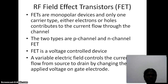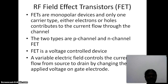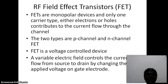Field effect transistors are shortly called FET, or monopolar or unipolar devices. Unipolar device means the current flow is due to only one type of carrier — that is either due to holes or due to electrons. In the case of BJT, the current flow is through two types of charge carriers, so it is called bipolar junction transistor. Here the current flow is due to only one type of charge carrier, so it is called unipolar or monopolar device. Either electrons or holes contributes the current flow through the channel.